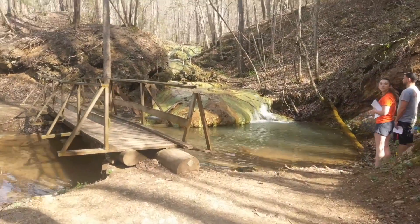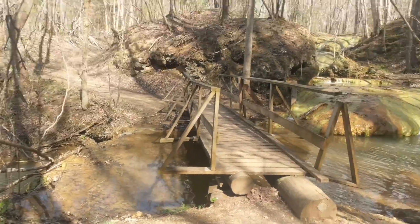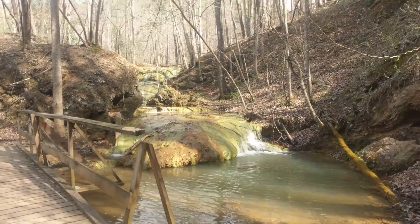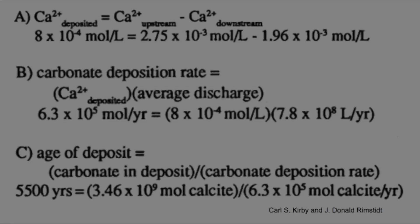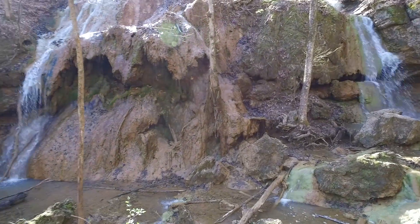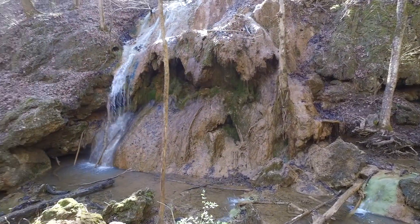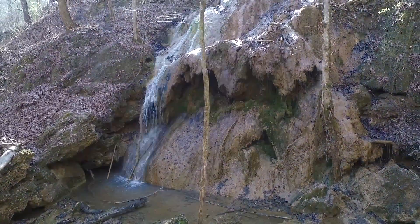The deposition of travertine is one of the greatest and most spectacular attractions that the preserve has to offer. The namesake fall sits on a growing travertine deposit ranging over 80 feet high. The deposition of travertine at Falls Ridge occurs very slowly — it took the falls about 5,500 years to form. Deposition occurs at a rate of about 3.2 millimeters per year, or roughly the thickness of two quarters.